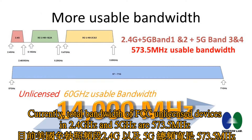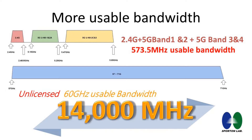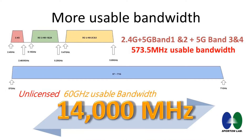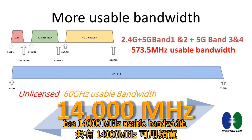Currently, the total bandwidth of FCC unlicensed devices in 2.4GHz and 5GHz is 573.5MHz. Unlicensed 60GHz, from 57GHz to 71GHz, has 14,000MHz of usable bandwidth.